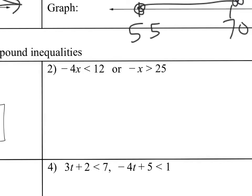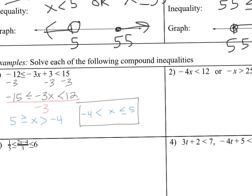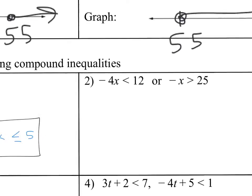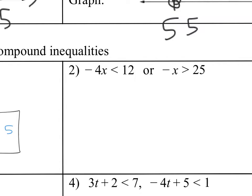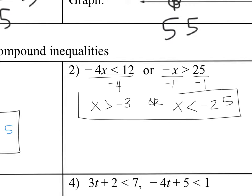Number 2, we have an or. So an or is you're going to solve these inequalities just like you did in the previous section. So you're going to divide by negative 4. That's going to change the sense of the inequality. x is less than negative 25. So if I graph this, this is my answer. I'm just going to do a graph of this.